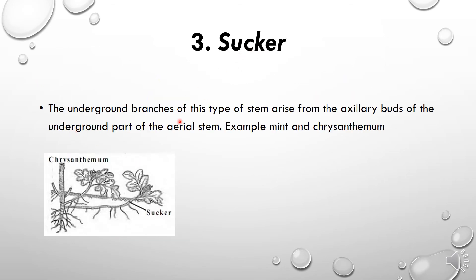Sucker: the underground branches of this type of stem arise from the axillary buds of the underground part of the aerial stem. The part of the stem which is underground produces some aerial branches — these are called suckers. Their function is to absorb nutrients from the main stem. Examples include mint and chrysanthemum.